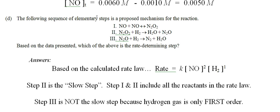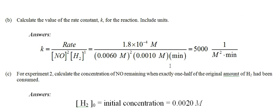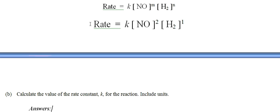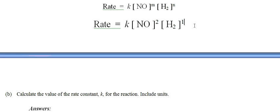The following sequence of elementary steps is a proposed mechanism for the reaction, where we have Step 1, Step 2, and Step 3. Based on the data presented, which of the above is the rate-determining step? Now, we calculated our rate law right here.